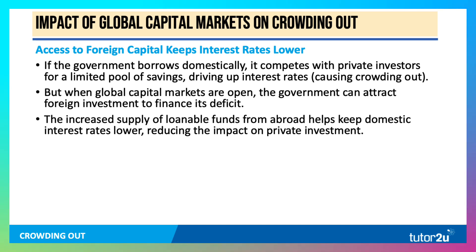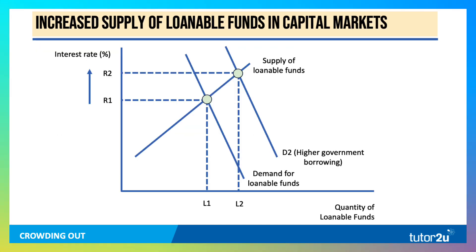Essentially, the supply of loanable funds goes up, and that helps keep domestic interest rates lower. So thinking back to the loanable funds diagram, there was the increase in government borrowing causing interest rates to go up.